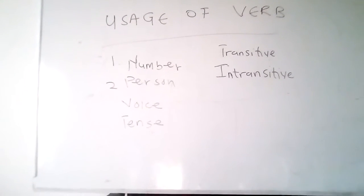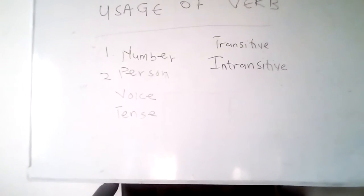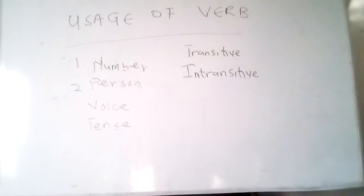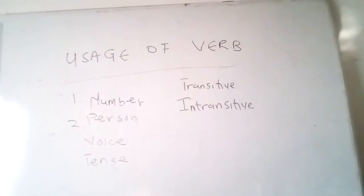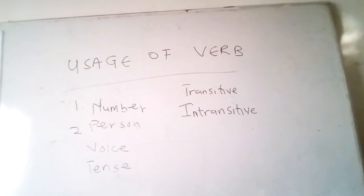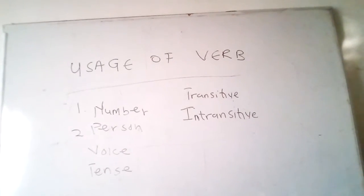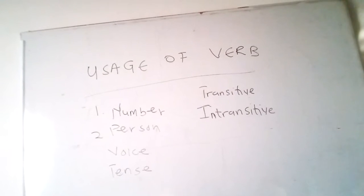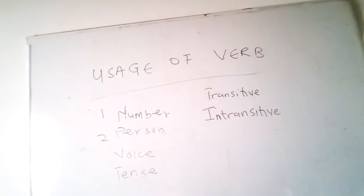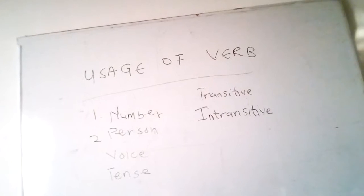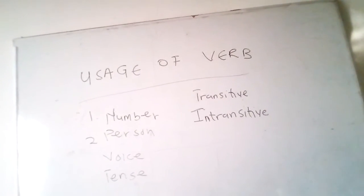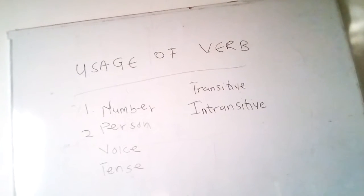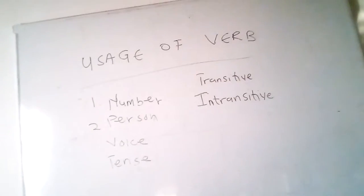For example: 'Darkon likes Victoria' — note that Darkon, the subject, is the doer of the action 'likes'. And 'Daniel punished me yesterday' — note that Daniel is the doer of the verb 'punished'. Now let's go to the passive voice. Passive voice indicates that the subject of the verb is acted upon, not the actor directly.